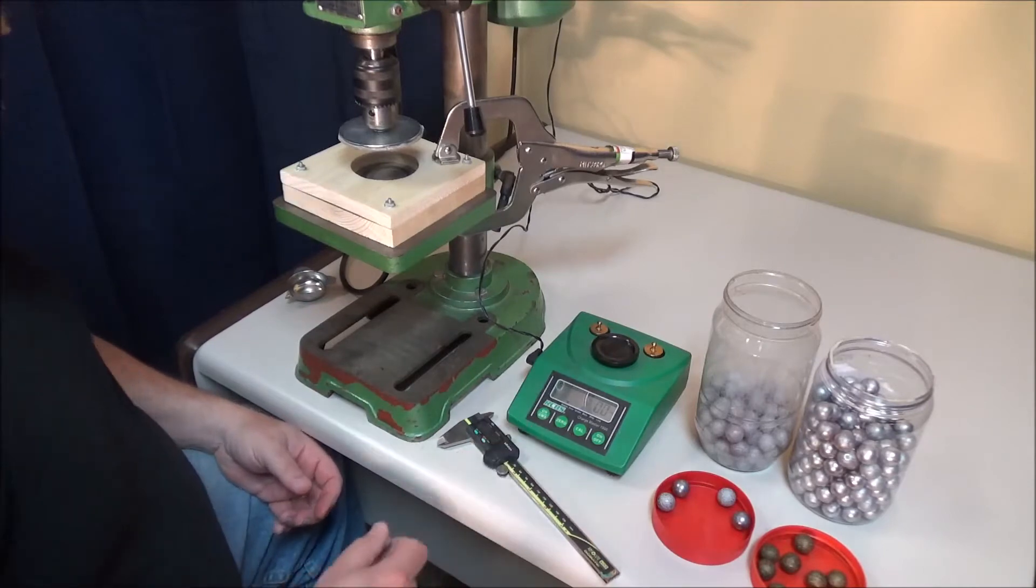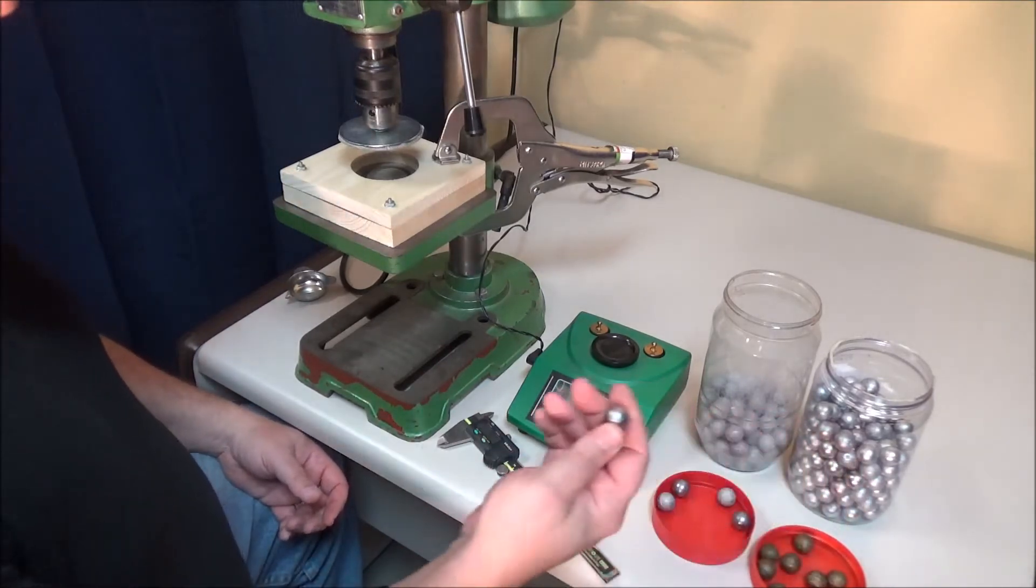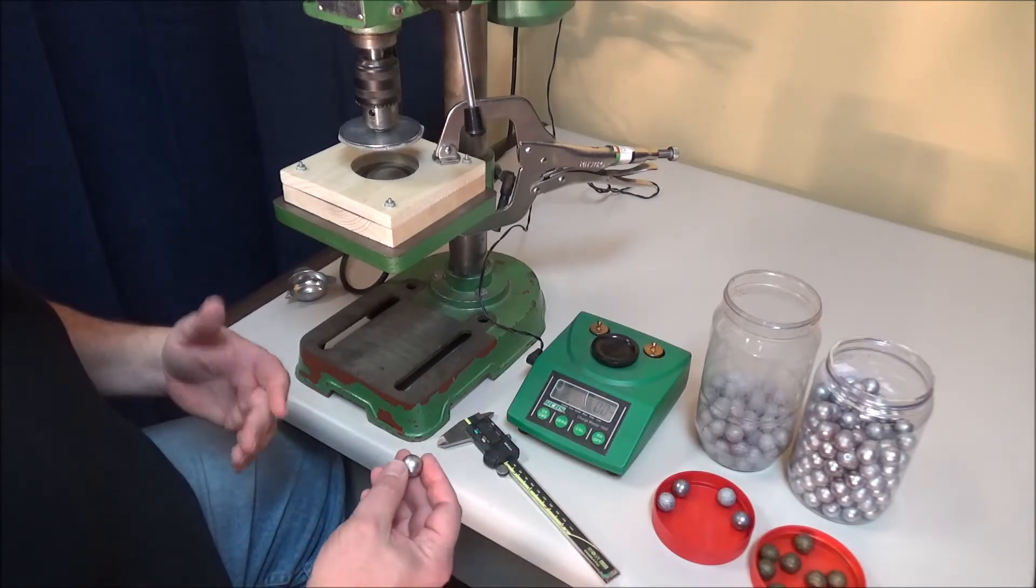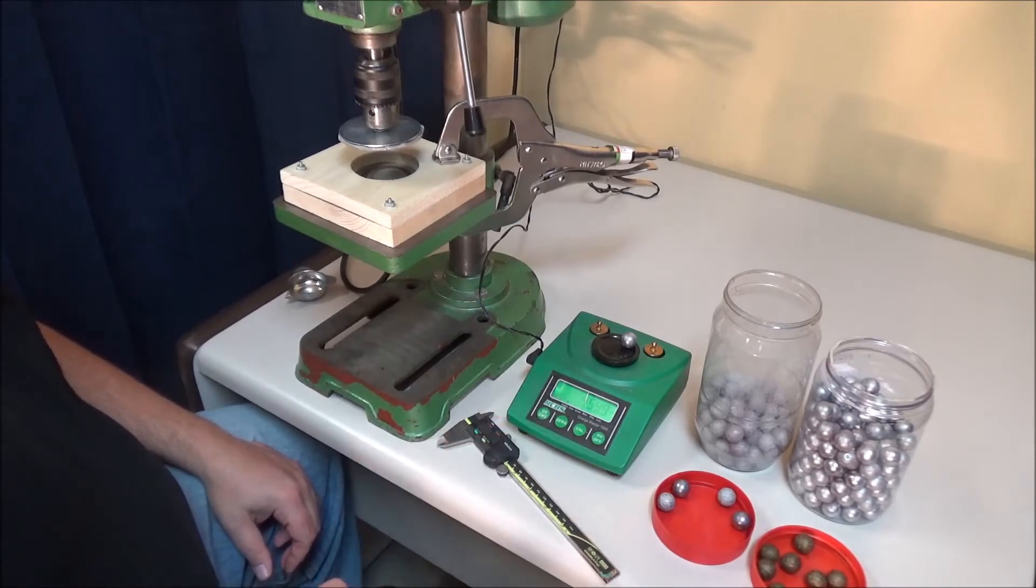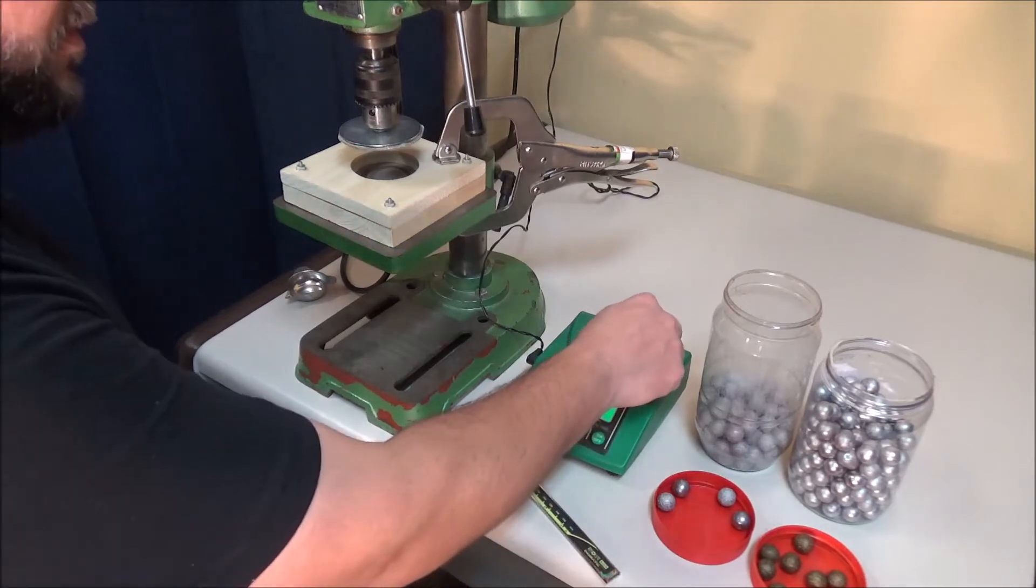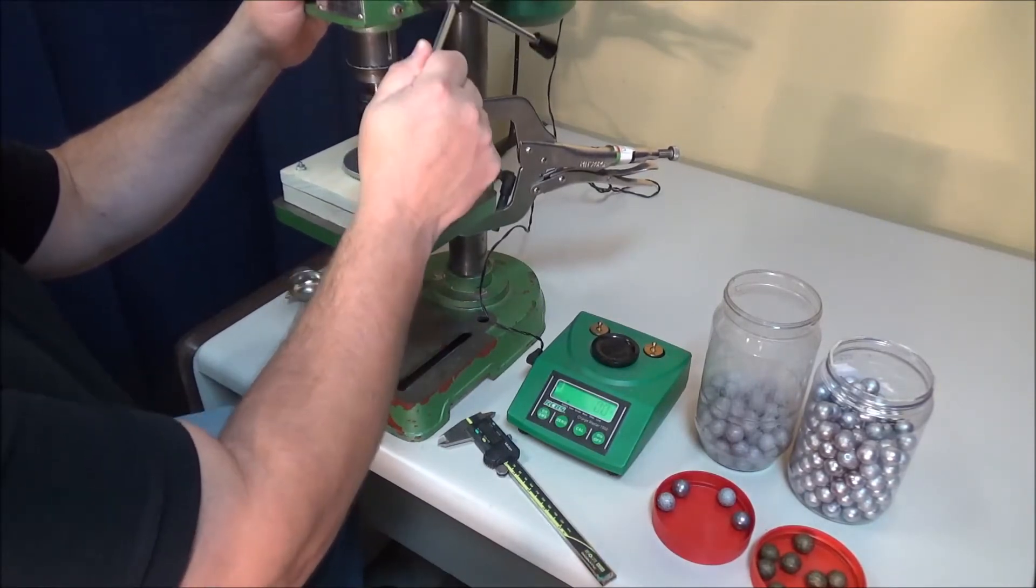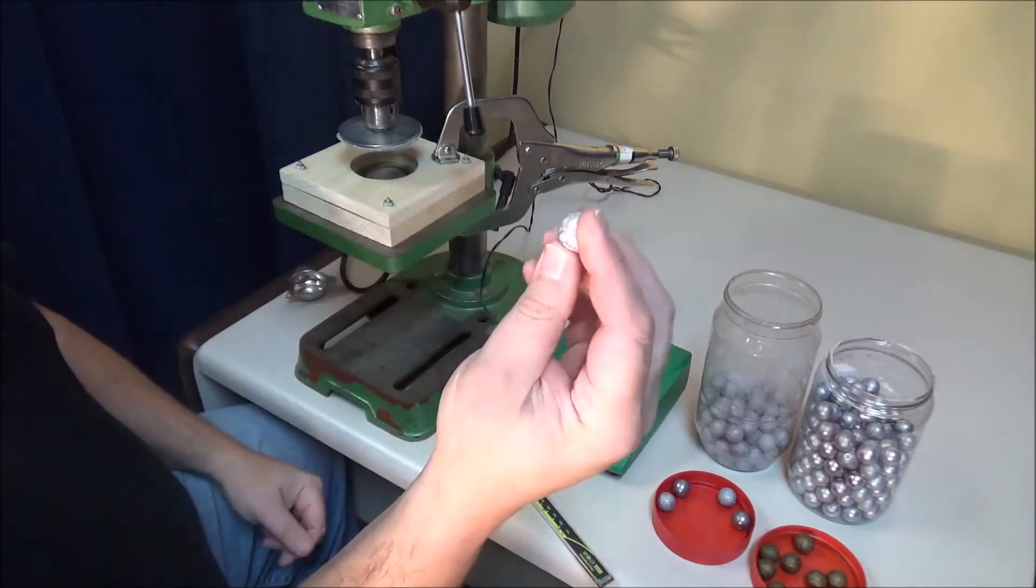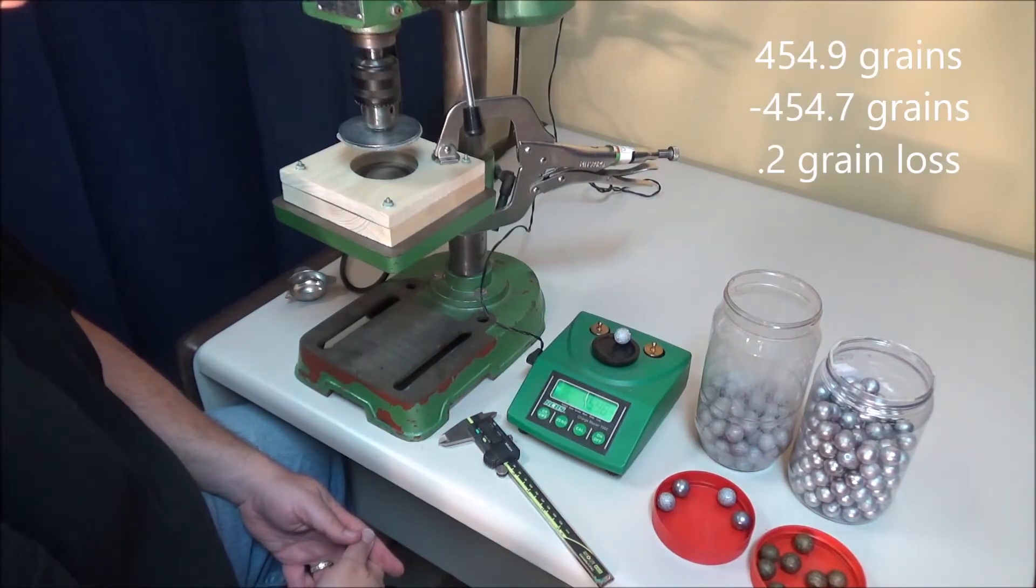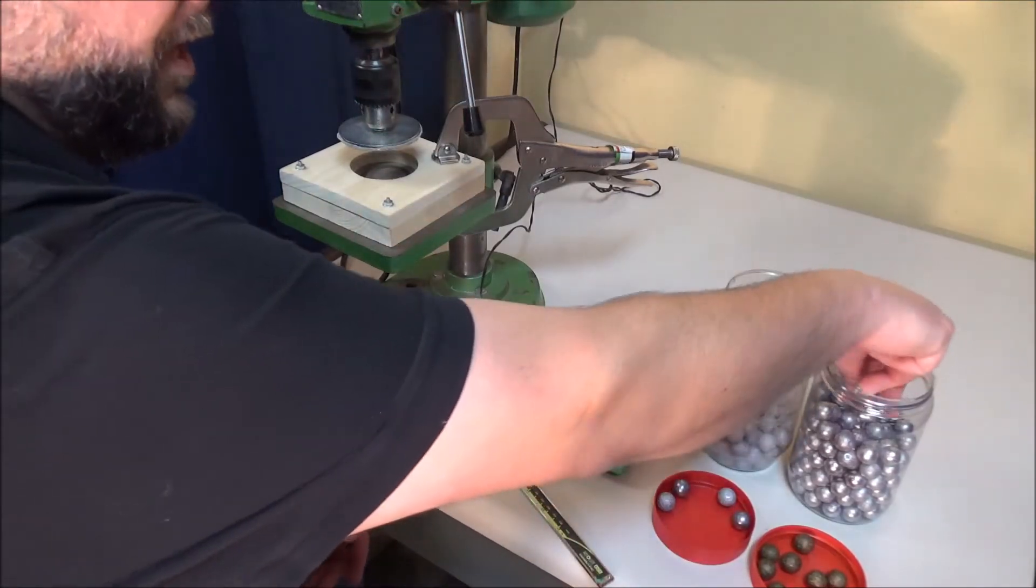So let's take a look and see. We've got our RCBS Chargemaster 1500 scale here and we'll do some tests on weight first. This is the wheel weight, stuff that I'm casting out of wheel weight which is what I shoot in competition. So we'll try the wheel weight ones first. Before we stick it in the machine let's weigh it. So 454.9 grains, so almost 455. Alright there's our round ball and let's see how much it weighs. 454.7, so it's 0.2 grains lighter than it was. So that's how much material we've lost.